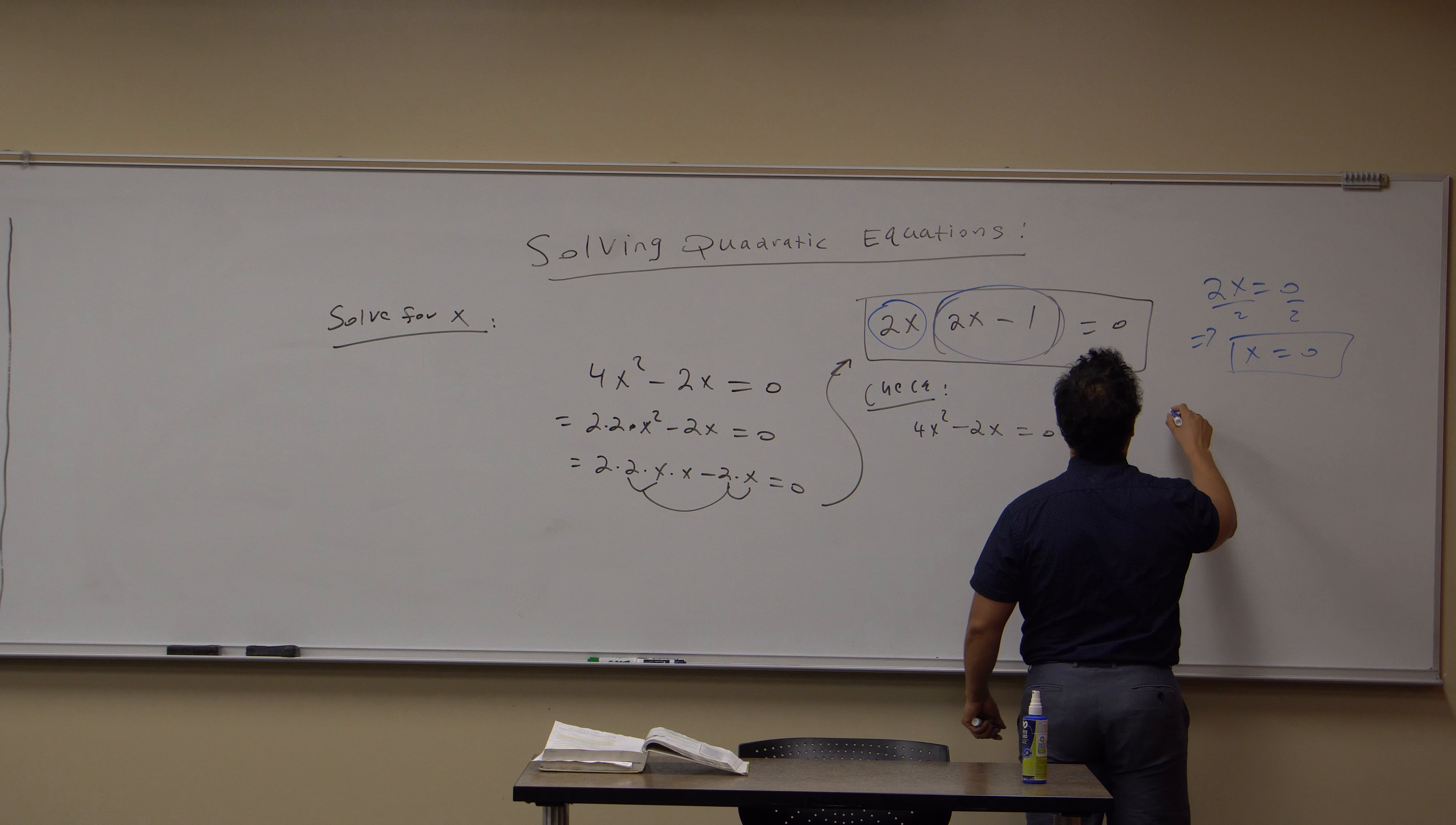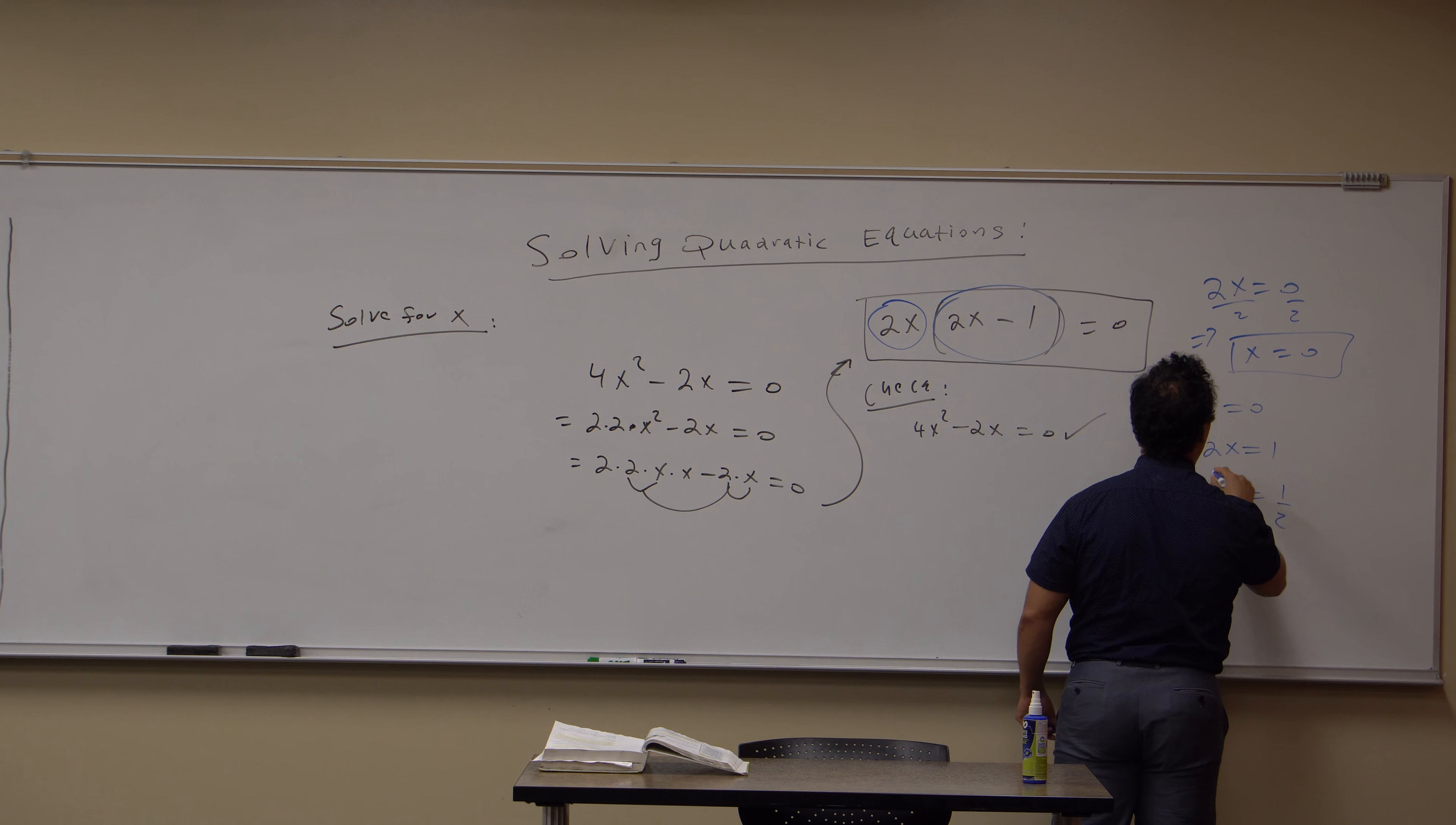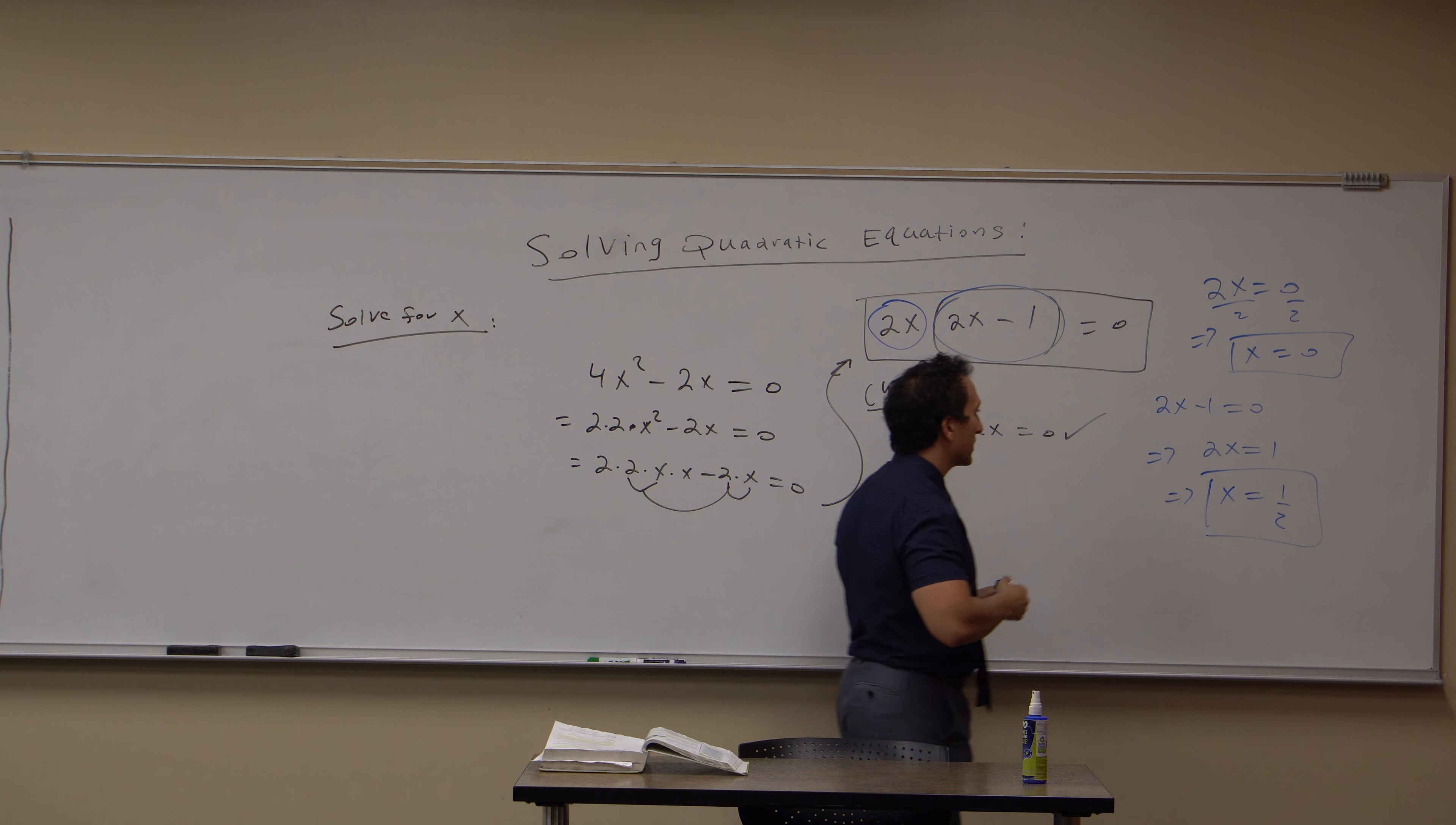And setting this one equal to 0, this other term, 2x - 1 = 0, I add 1 to both sides, so I get 2x = 1. I divide both sides by 2, so I get x = 1/2. So here are two solutions to this equation.